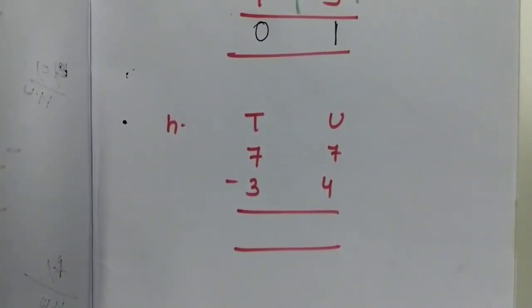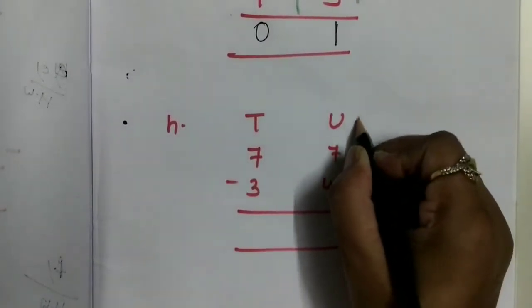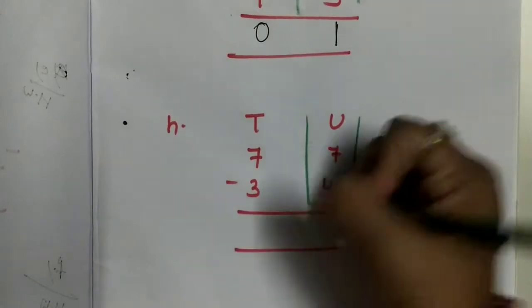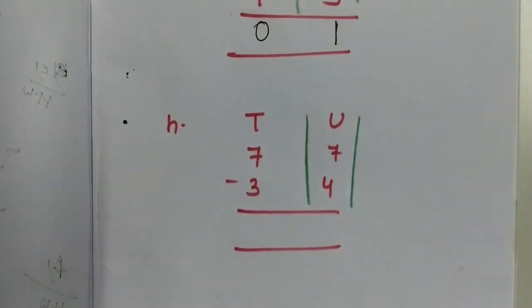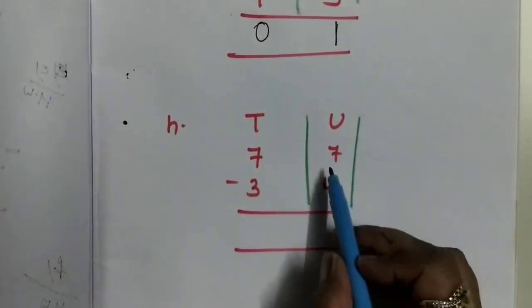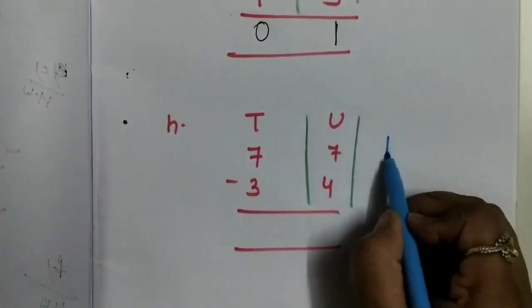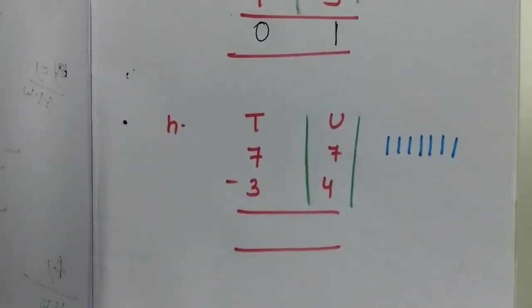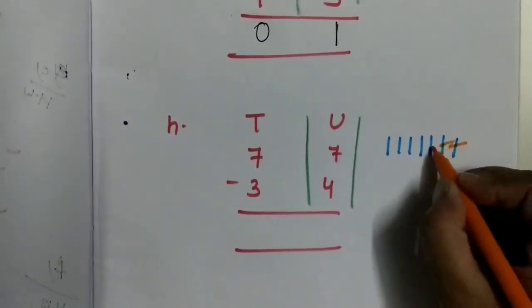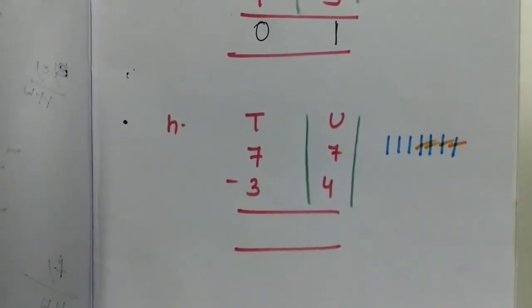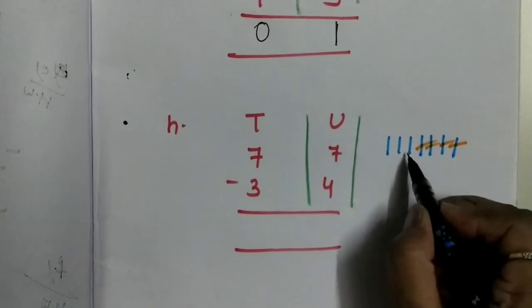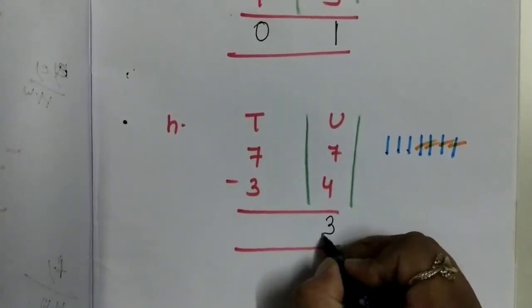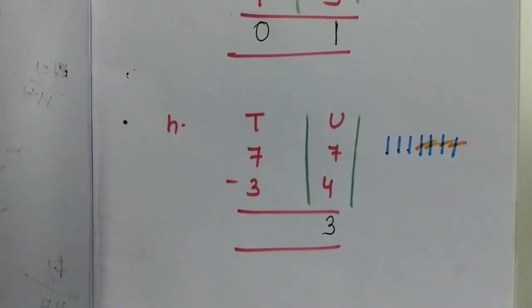Come to the next sum, that is H. First solve the units column — 7 minus 4. Draw 7 lines, then cut 4: 1, 2, 3, 4. How many lines are remaining? Count it: 1, 2, 3. So 7 minus 4 will be 3.